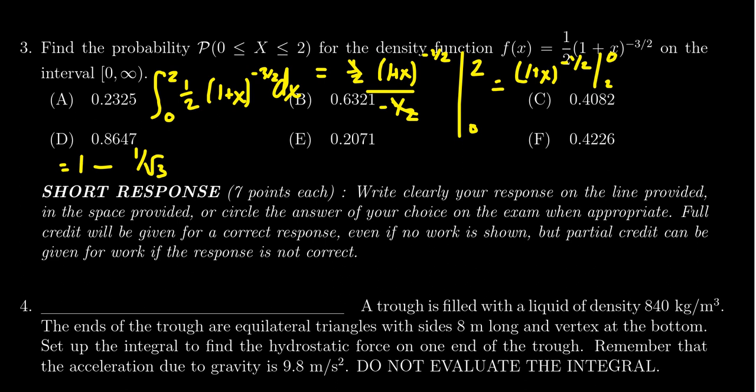Put that into a calculator: 1 - 1/√3 equals 0.4226. That gives us F as the correct answer, approximately 42%.